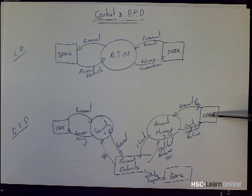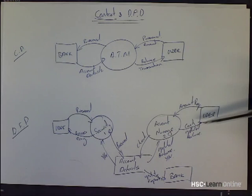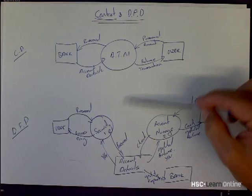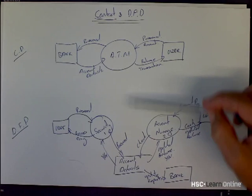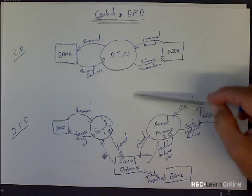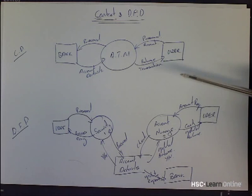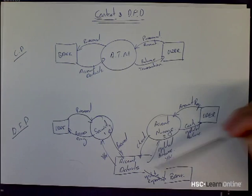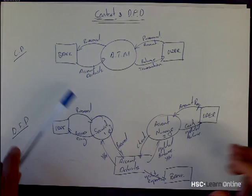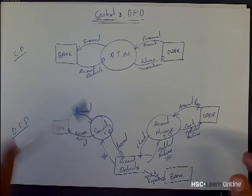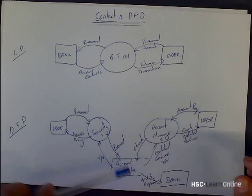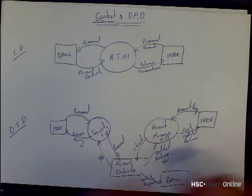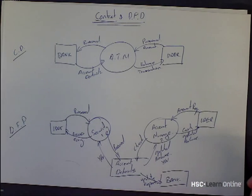Notice how I'm using my external entities. I might have been able to put the user square in one place and have only one user block, but I thought it was simpler this way. Notice I'm not showing any flow — I'm not saying this happens first and then that. It's just generally showing the systems and what information is going to and from which system.